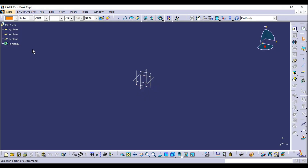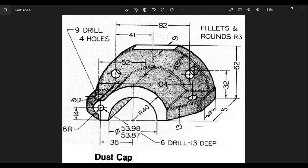You can see three planes here: the XY plane is the top plane, the YZ plane is the front plane, and the ZX plane is the right plane. Now we will see the dimensions. First we need to create two circles — the first one has radius 40 and the second one has diameter 53.98 and 53.87. We can simply average these values or use one of them to create the circle.